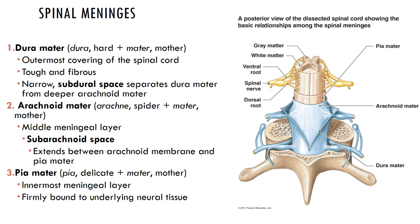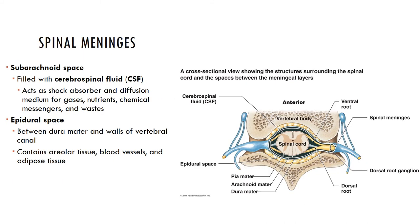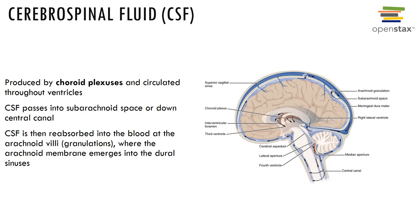In adults, the CSF can be safely withdrawn in a procedure known as a lumbar puncture or spinal tap, where a needle is inserted into the subarachnoid space in the lumbar region inferior to the tip of the conus medullaris. The cerebrospinal fluid is produced by the choroid plexus and circulates through the ventricles.